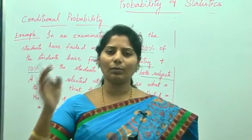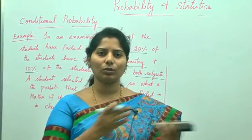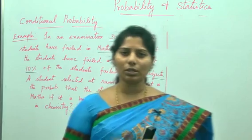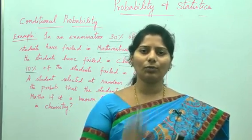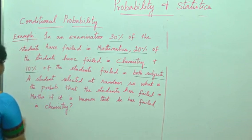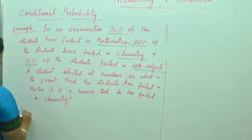If you write P of A is equals to this, P of B is equals to some 20% or something, they will not give you even single mark. So, the solution, first write down the statement.